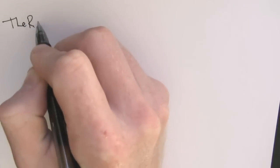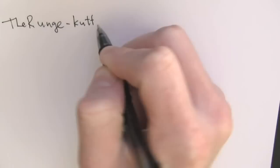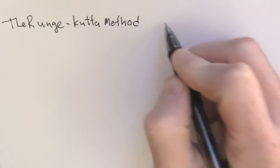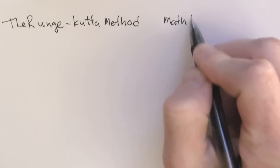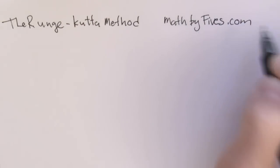What are we doing here? This is the Runge-Kutta method for approximating solutions to a differential equation using a slope field. Looks like Math by Fives is putting it out. They put out some great stuff. All right, what do you got for us?